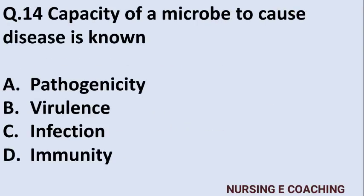Question 14: Capacity of a microbe to cause disease is known as — Option A: pathogenicity, Option B: virulence, Option C: infection, Option D: immunity. The capacity of a microbe to cause disease is called pathogenicity. Answer is Option A — pathogenicity.